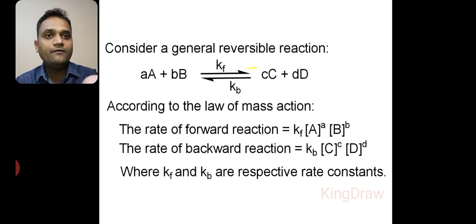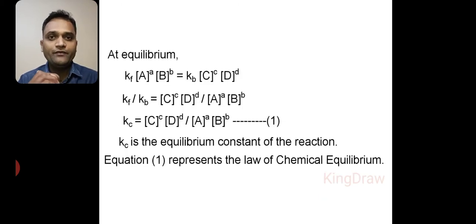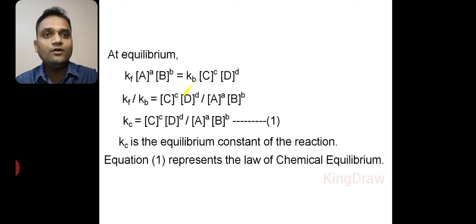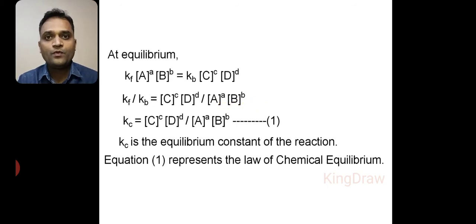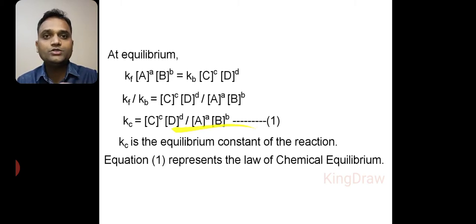Where Kf is the rate constant for the forward reaction, while Kb is the rate constant for the backward reaction. At equilibrium, Kf into [A] raised to a into [B] raised to b is equal to Kb into [C] raised to c into [D] raised to d. If we take Kb to the other side, it becomes Kf upon Kb equals [C] raised to c into [D] raised to d upon [A] raised to a into [B] raised to b. For Kf upon Kb, we write Kc.